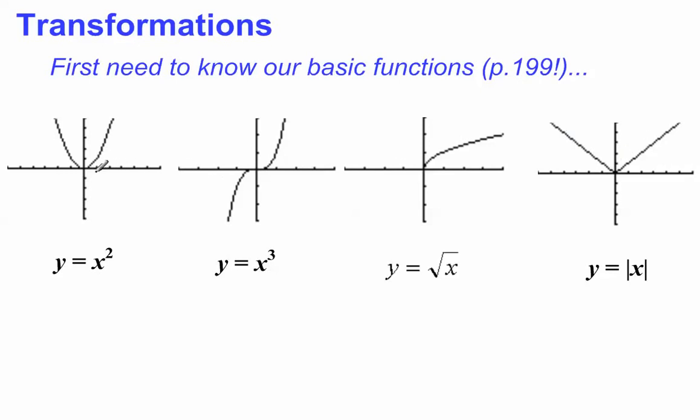Now for each of these, we should know some basic points. First of all, they all go through the origin (0, 0). Actually, all of them have the point (1, 1) on them.